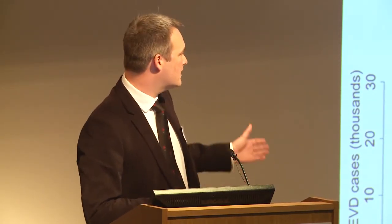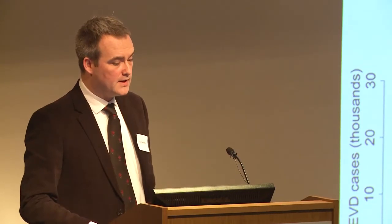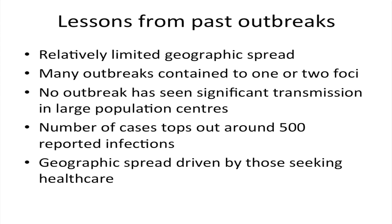Mapping the niche helps us address wider epidemiological issues in relation to filovirus disease. What do we learn from past outbreaks? Pretty much universally, very limited geographic spread — many outbreaks contained to just one or two foci. No outbreak previous to the current one saw significant transmission in large population centers, and it's very rare for previous epidemics to reach more than 500 infections.